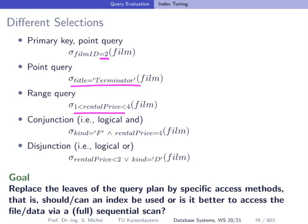We can have conjunctions of sub-predicates — for instance, the kind of movie should be 'F' and the rental price should be 4, using the logical AND. We can also have a connection of sub-predicates using a logical OR — for example, rental price smaller than 2 or the kind of film should be 'D'.